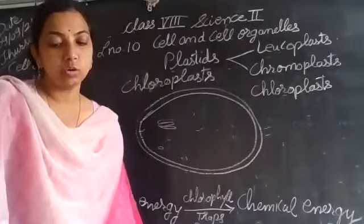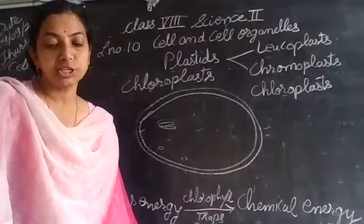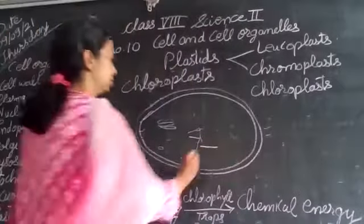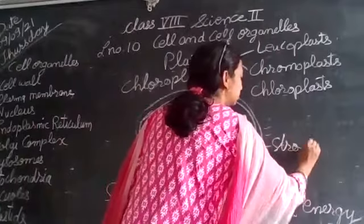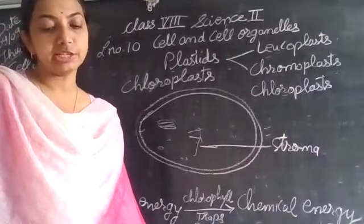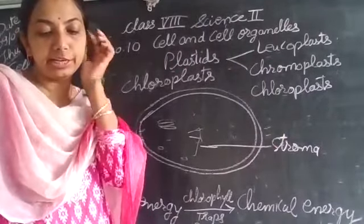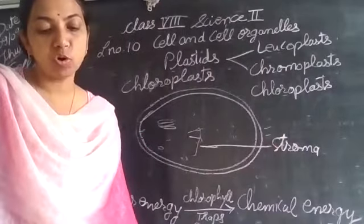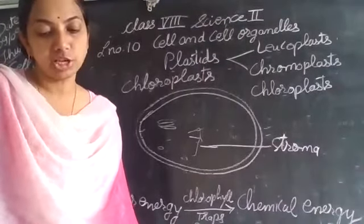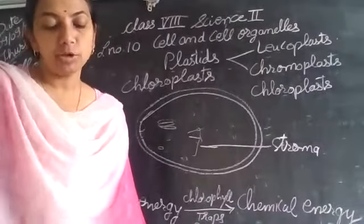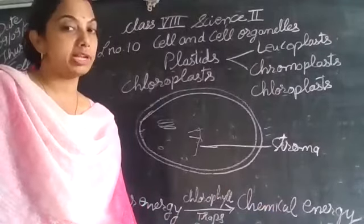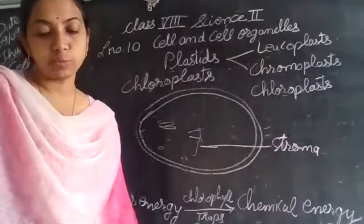Stroma is the part of the chloroplast that contains enzymes, DNA, ribosomes, and carbohydrates that are necessary for photosynthesis. All these things present in the stroma are going to participate in the photosynthesis process.